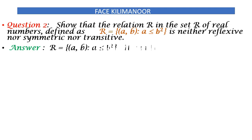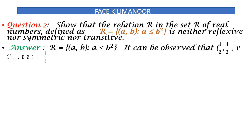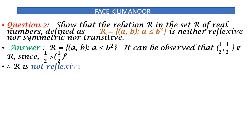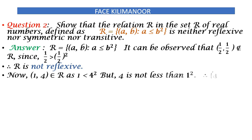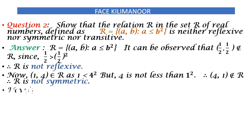The relation R = {(a,b) : a ≤ b²}. It can be observed that (1/2, 1/2) does not belong to R, since 1/2 is not less than or equal to (1/2)². So R is not reflexive. Now (1,4) belongs to R as 1 ≤ 4², but 4 is not less than or equal to 1². Therefore (4,1) does not belong to R, so R is not symmetric.